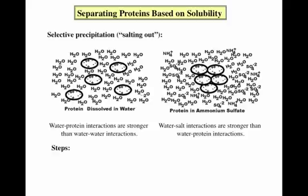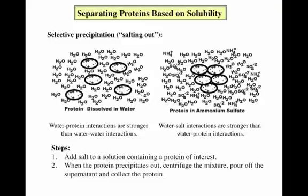To perform a salting out procedure, you add salt to a solution containing a protein of interest. When you can see that the protein has precipitated out of solution, centrifuge the mixture, pour off the supernatant, and collect the protein. If your mixture contained a few different proteins, all of which had different solubilities, you could precipitate them out one at a time by gradually changing the salt concentration of the solution.